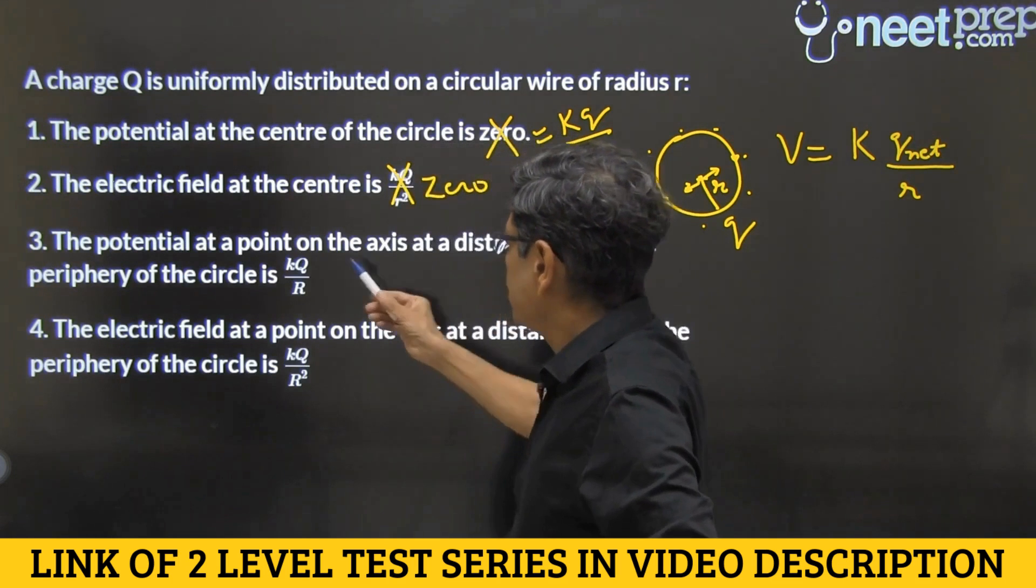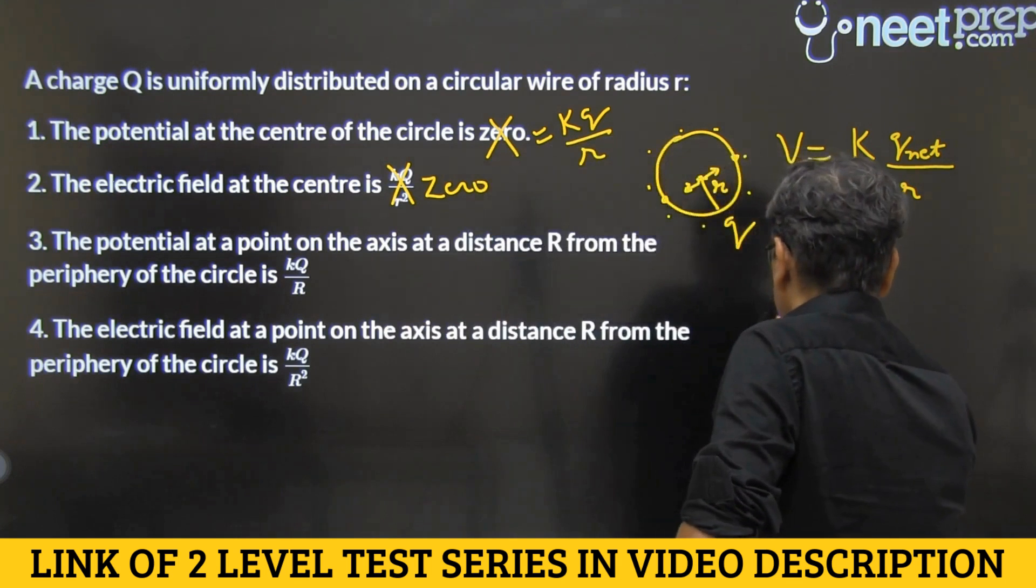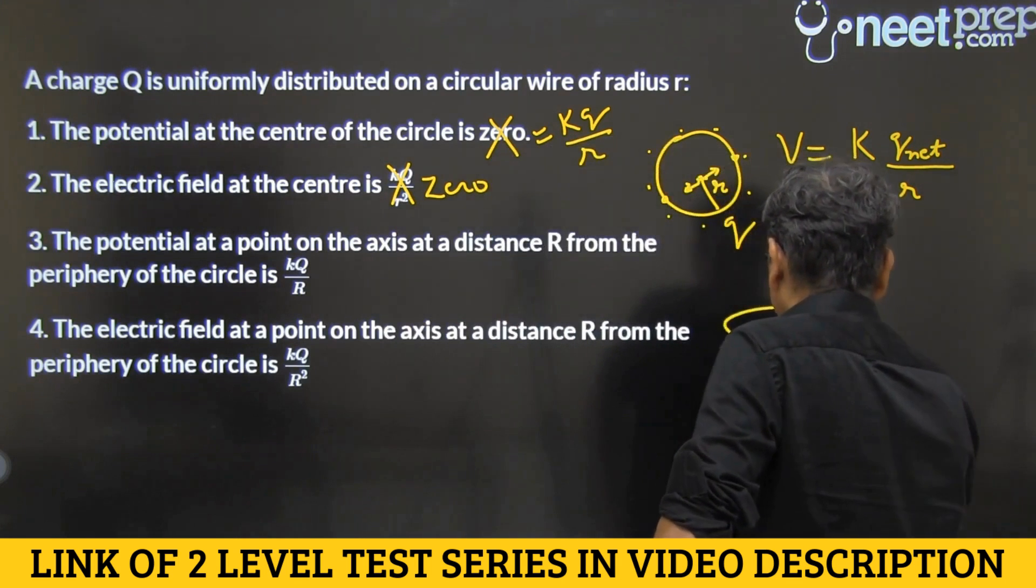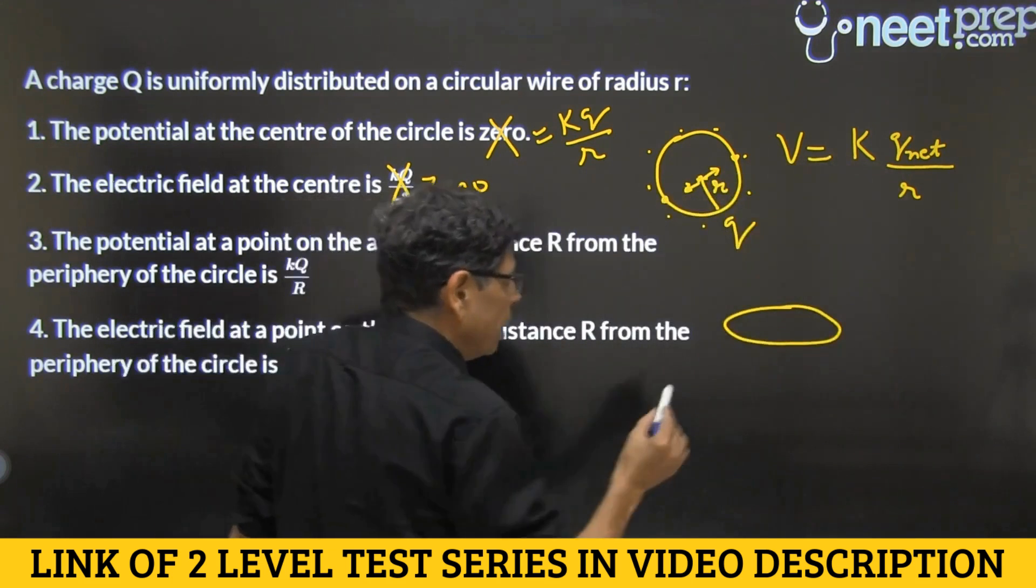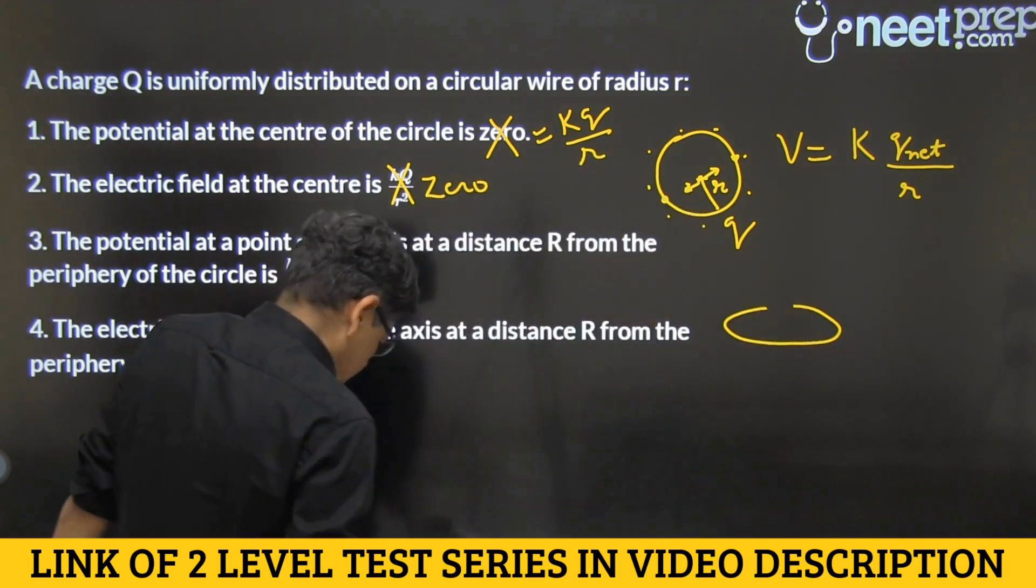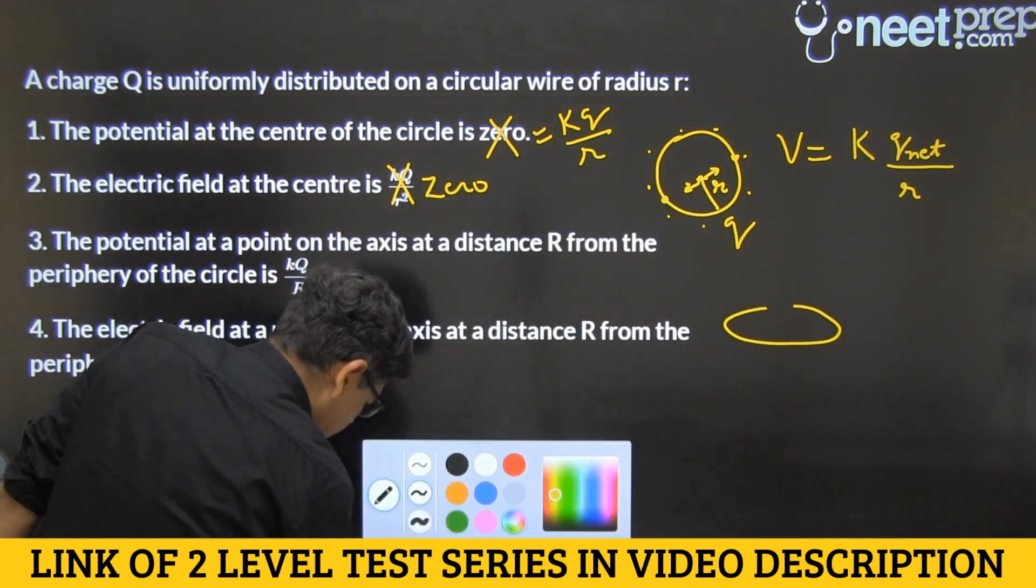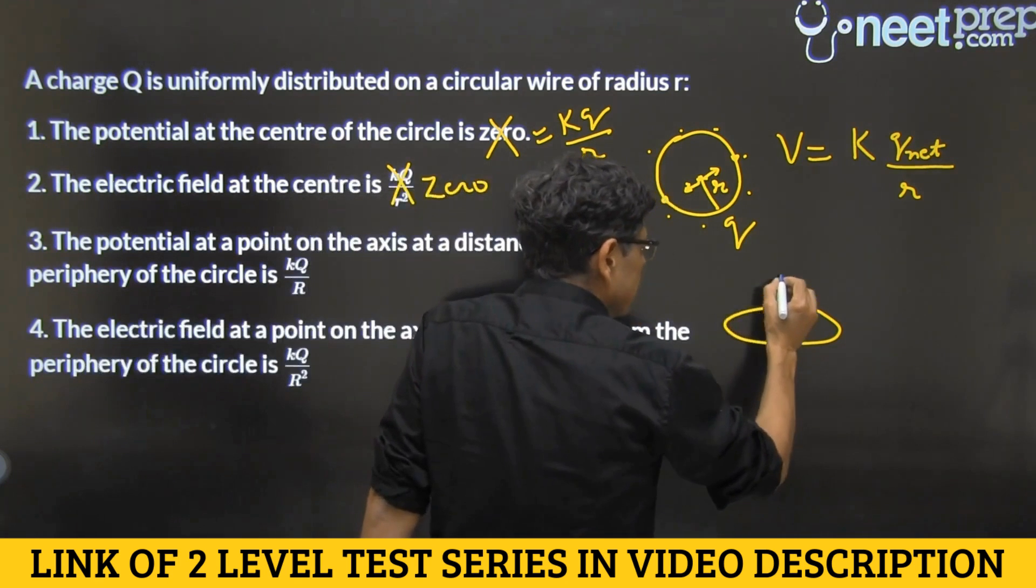So let's look at three. The potential at a point on the axis. Okay. So for that, we'll need another diagram. Maybe eraser, let's... this is the axis.